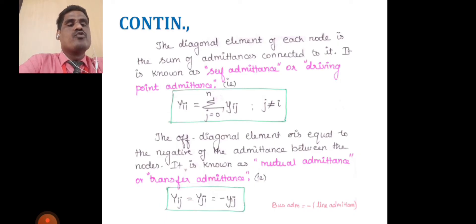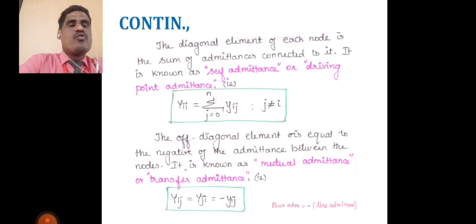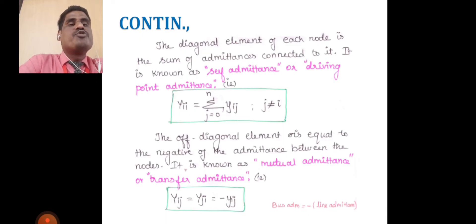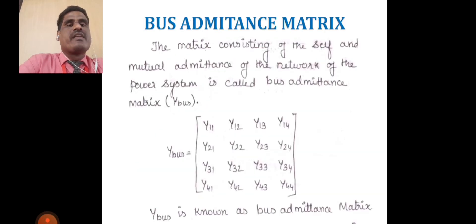The individual nodes — node 1, node 2, node 3 — these are all individual nodes, and that is self-admittance. Mutual admittance is nothing but different branches connected at a single point. For example, considering generator 1 and generator 2: generator 1 and generator 2 connect at one specific point or interconnect at one specific portion — that is the mutual point. So mutual admittance in the Y_bus matrix is y_ij = y_ji = −y_ij.